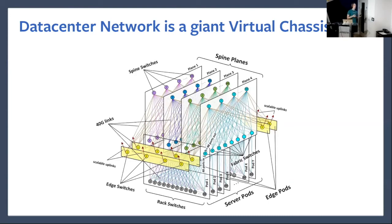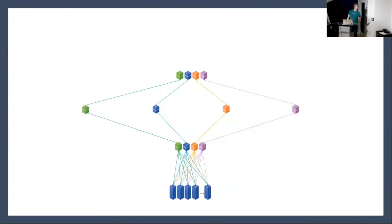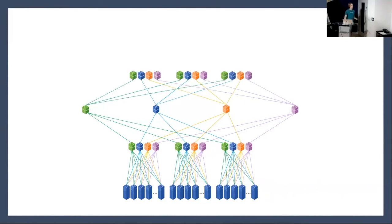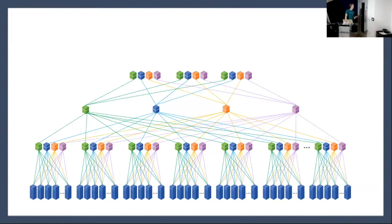We spend a lot of time talking about how massively scalable our design is, but one thing we don't talk about much is that it also gets very small. You can boil it down to its smallest iteration: 12 low-cost commodity switches. Put four in as your edge pod at the top, four at the bottom as your server pod, and four spines in the middle. This gives you up to 16 racks connected into your fabric using only 12 switches. Then as you add more racks, you simply add more server pods — four more switches every time you add 16 more racks. For more connectivity to the outside world, you put in more edge pods.